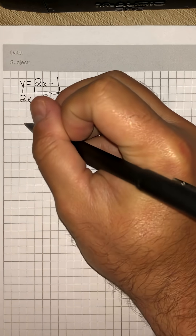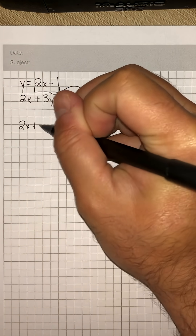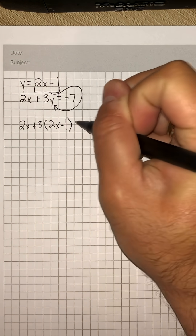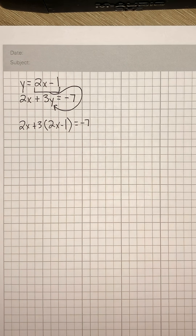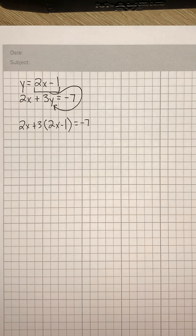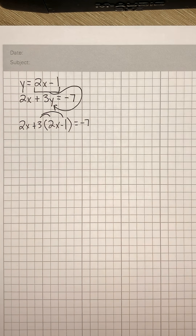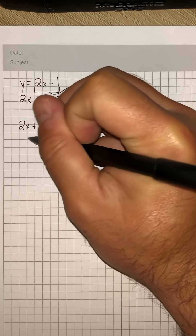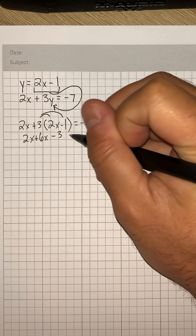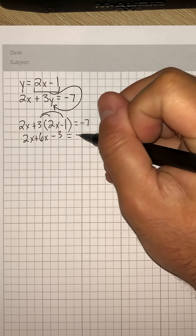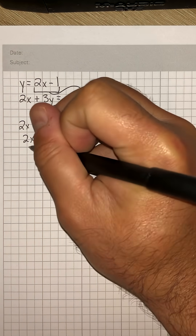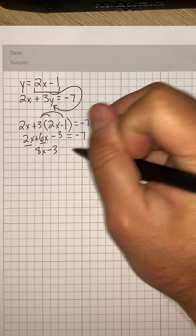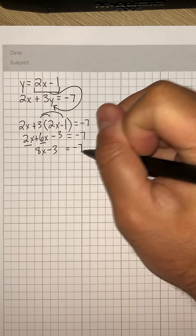So once we do that, we'll have 2x plus 3 times parentheses 2x minus 1, is equal to negative 7. Now we can solve for x. We're going to distribute the 3 to both terms to get 6x minus 3, and we bring down our 2x and our equal sign and our negative 7. Combining like terms gives us 8x minus 3 is equal to negative 7.